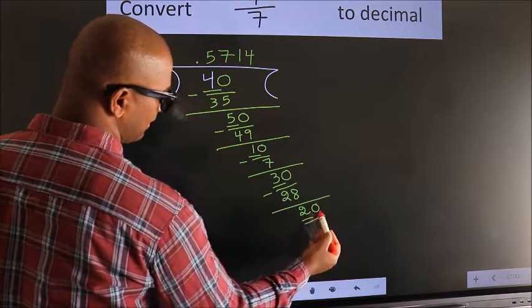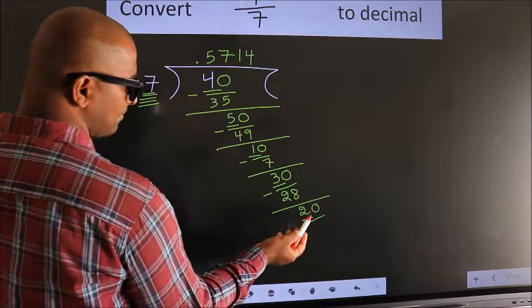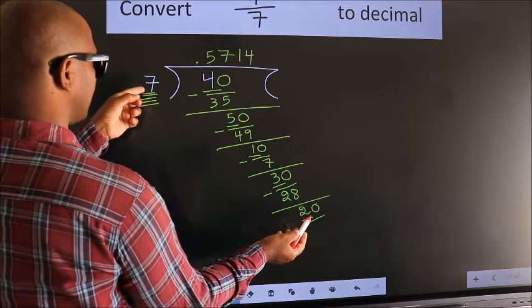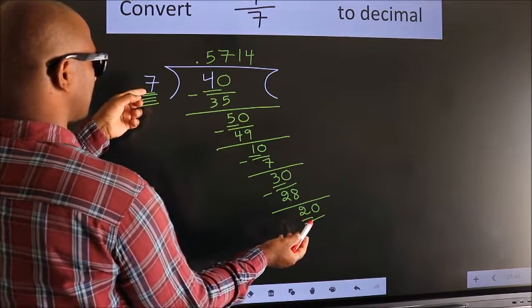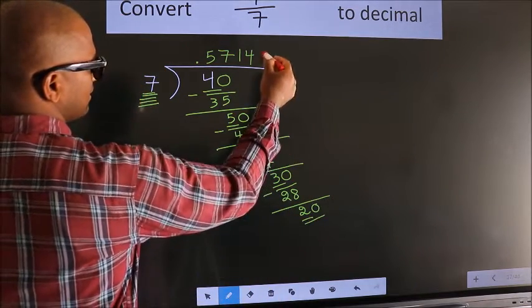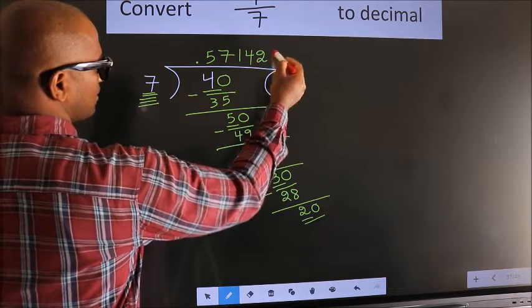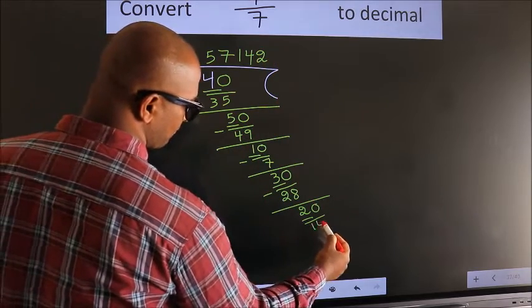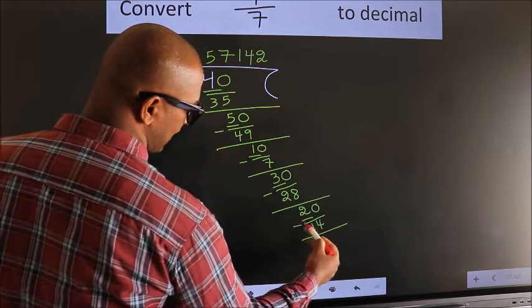We already have the decimal, so we can directly take 0, making it 20. A number close to 20 in the 7 times table is 7 twos, which is 14.